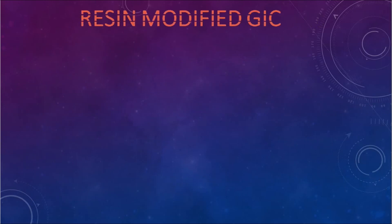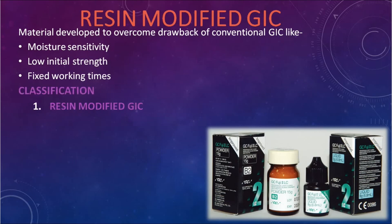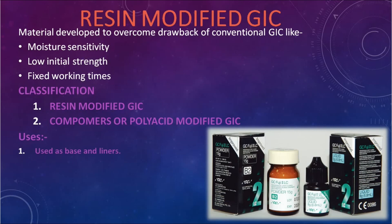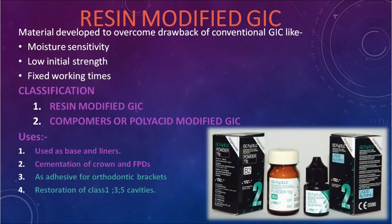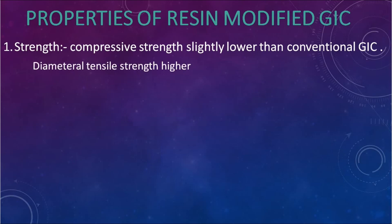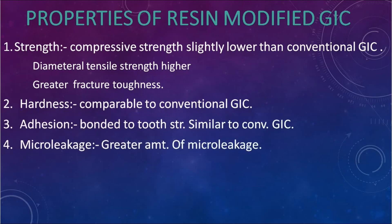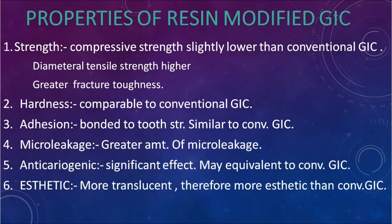Resin-modified GIC: overcomes drawbacks of conventional GIC such as moisture sensitivity, low initial strength, and fixed working time. Classification: resin-modified GIC and compomer (polyacid-modified GIC). Usage: used as base and liners, luting agent, adhesives for orthodontic brackets, and restoration of Class 1, 3, and 5 cavities. Properties: compressive strength is decreased; diametral tensile strength is increased; greater fracture toughness; hardness is comparable to conventional GIC; adhesion is similar; greater amount of microleakage; anticariogenic. Moreover, it is more translucent and therefore more aesthetic than conventional GIC.